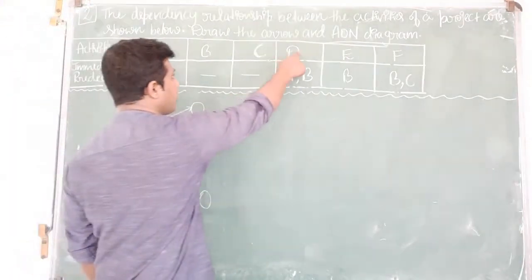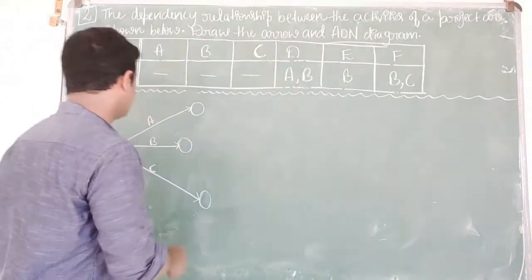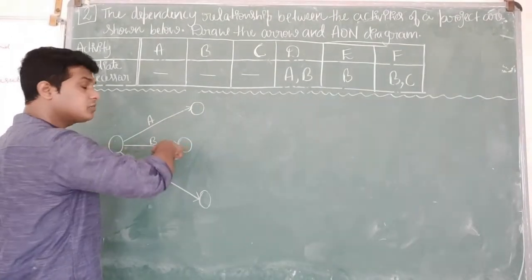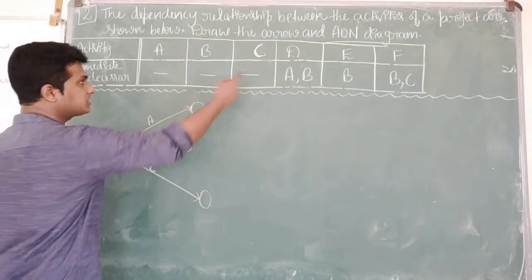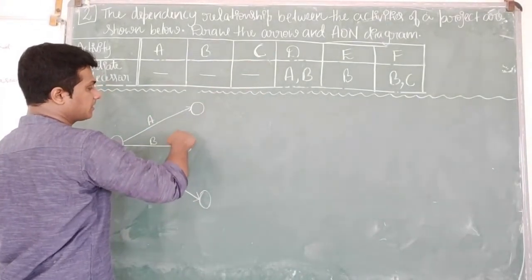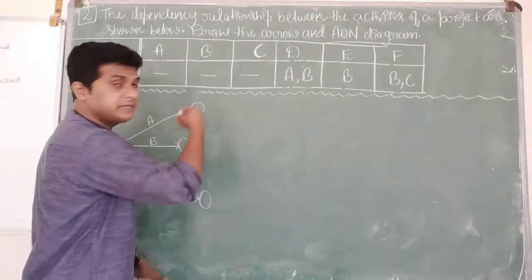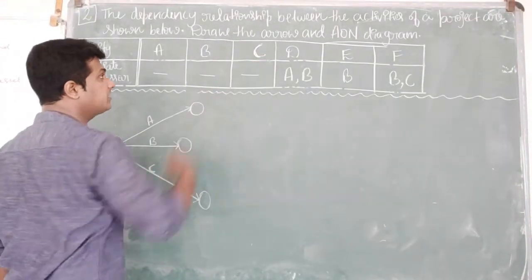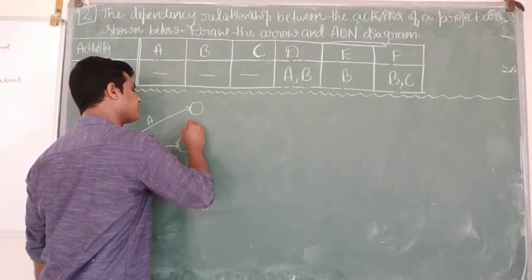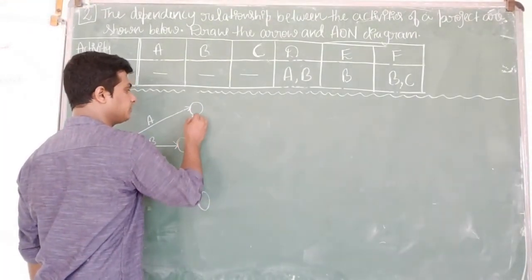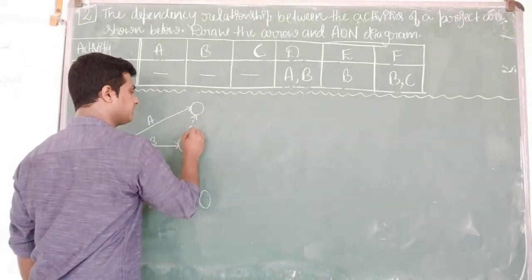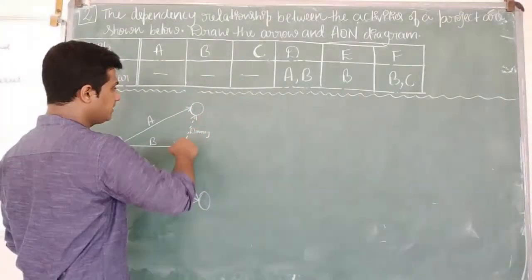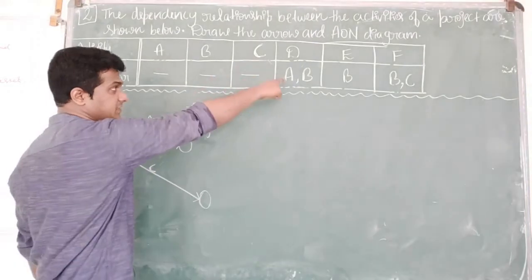To draw activity D, activities A and B should be completed. But currently A and B are at different events with no connection between them. Since we cannot start activity D before completing both A and B, there should be a link between these two activities. For that reason, we will draw a dummy activity from B to A's node using a dotted line. This is called a project dummy or logical dummy, because it establishes a necessary connection to draw the diagram.